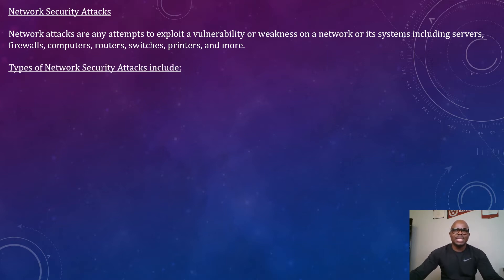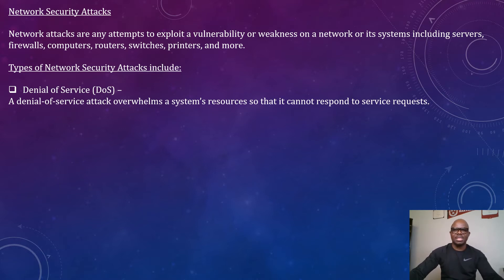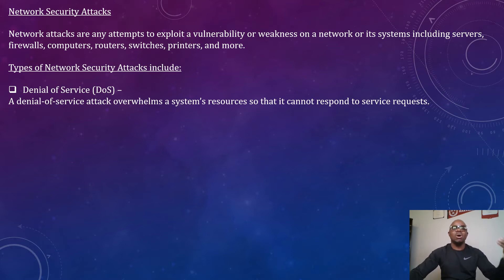What are the different types of network security attacks? They include, one, denial of service attack. These are attacks that tend to overwhelm the system resources so that the system cannot respond to service requests — an overwhelm of requests to the extent that it brings down the server and makes the system no longer available online. That is an example of denial of service attack, and it can also create an opportunity to launch another form of attack.